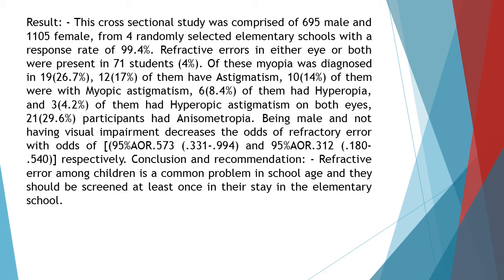21 (29.6%) participants had anisometropia. Being male and not having visual impairment decreases the odds of refractive error, with odds ratios of 95% CI: 0.573 (0.331, 0.994) and 95% CI: 0.312 (0.180, 0.540) respectively.